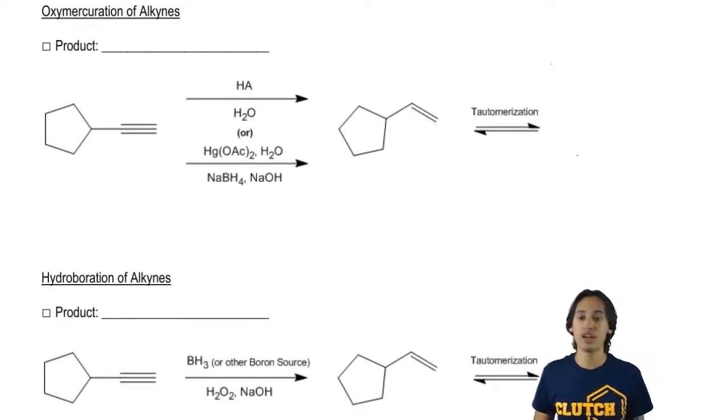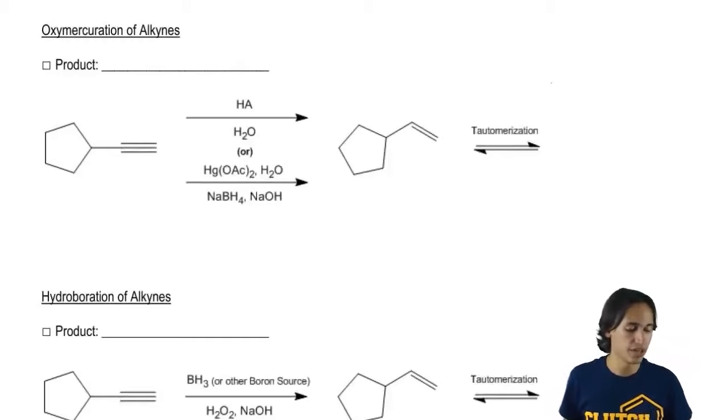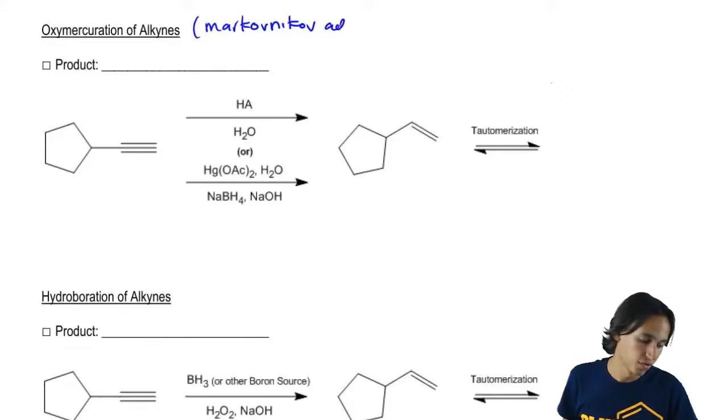There is oxymercuration of alkynes and there's hydroboration of alkynes. When we do an oxymercuration of an alkyne, what we're really doing is a Markovnikov addition of alcohol.